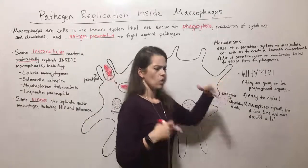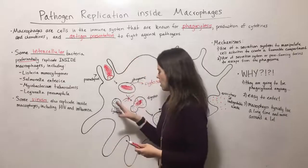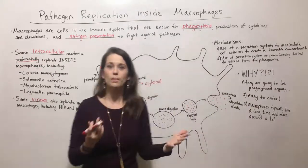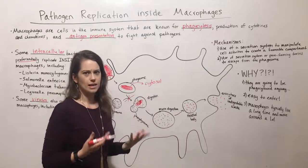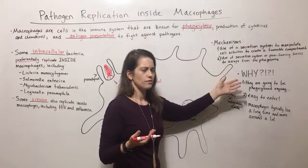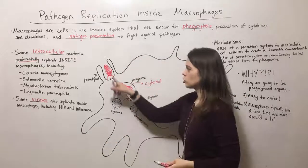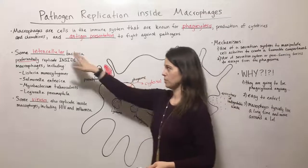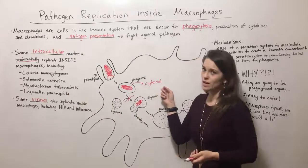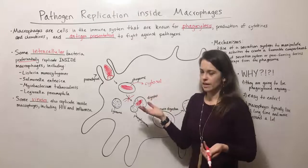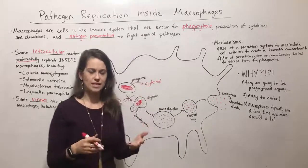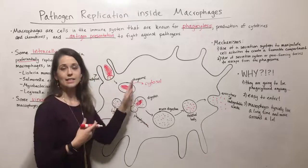We still haven't talked about why. Why do pathogens want to do this? This is a cell that is made to kill these pathogens, to completely digest them and spit them out. Scientists have a few ideas. One is that if they're going to be phagocytosed anyway, they might as well evolve a way to deal with it. These macrophages are so good at recognizing some of these pathogens, especially intracellular bacteria, that it's likely if they get into the body, they're going to wind up inside a macrophage. So evolutionarily speaking, over many generations, they would adapt ways to still be able to infect the cell.